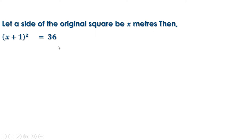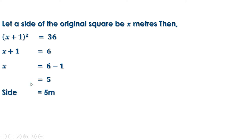Taking square root on both sides, we get x + 1 = 6. Taking 1 to the other side, we get x = 6 - 1 = 5. That is, the side of the original square is 5 meters. When it is increased by 1 it becomes 6, and then the area is 36.